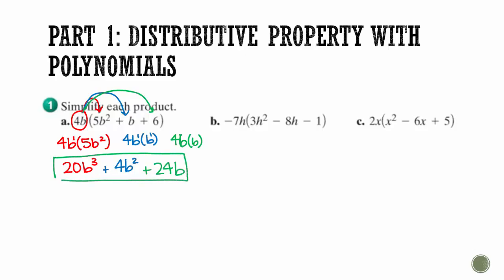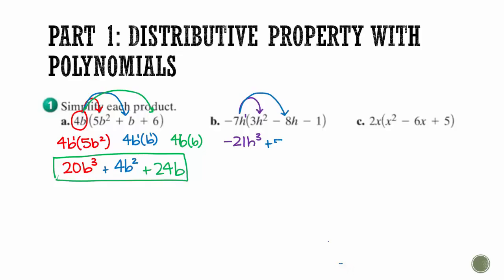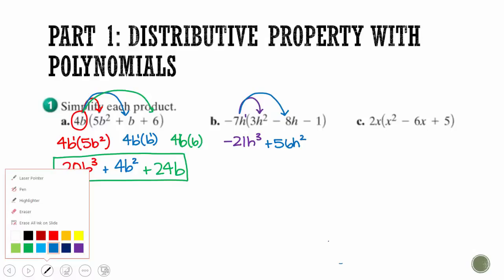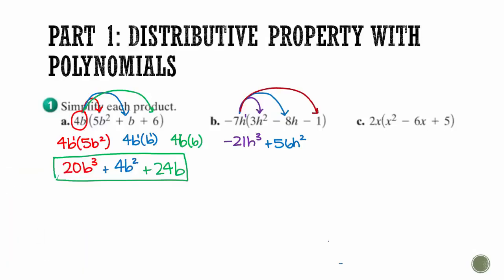You are going to get to the point where you do not need this in-between step, and you can just draw your arrows and distribute. So, negative 7h times 3h squared: multiply the numbers to get negative 21, and h to the first times h squared is h cubed. Negative 7h times negative 8h gives you positive 56, because negative times negative is positive, and h times h is h squared. Then negative 7h times negative 1 gives us 7h.